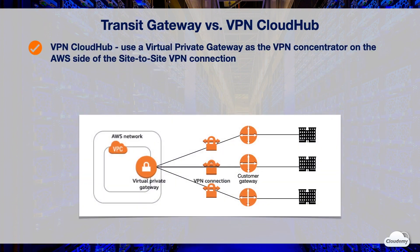VPN CloudHub lets you leverage existing multiple site-to-site VPN connections and create a simple hub-and-spoke model. CloudHub uses a virtual private gateway as the VPN concentrator on the AWS side of the VPN connection. This is a low-cost solution to provide secure communication between remote sites when you already have multiple VPN connections to a single VPC.